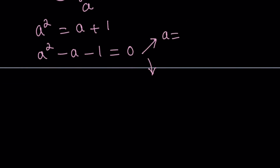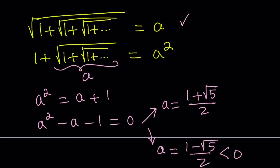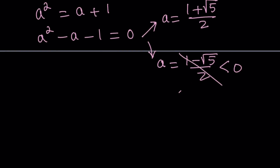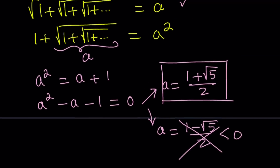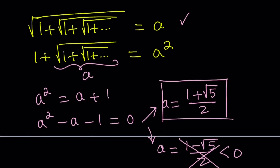This quadratic has two solutions using the quadratic formula. One is 1 plus the square root of 5, divided by 2. The other is 1 minus root 5 over 2. Since the square root of 5 is greater than 1, this second value is negative. Our expression is positive, so we reject the negative value. Therefore, a equals 1 plus root 5 over 2 — which is the golden ratio.